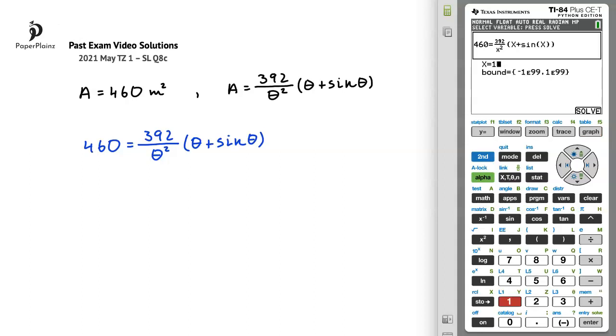Finally, I will press solve, so the graph button. The result that we got, 1.439177 and so on, seems reasonable, and we now just have to round to three significant figures.